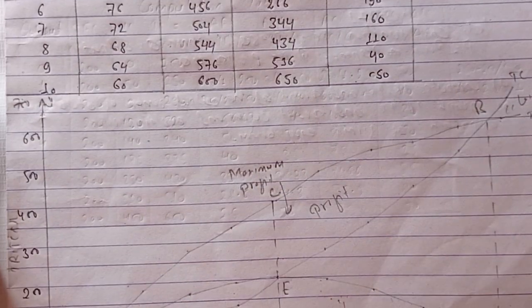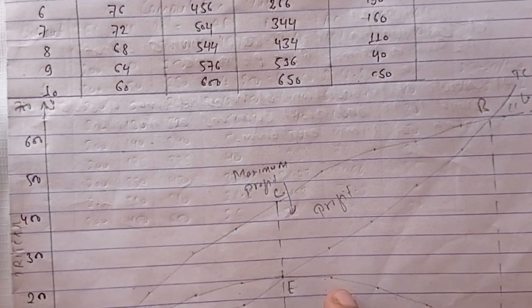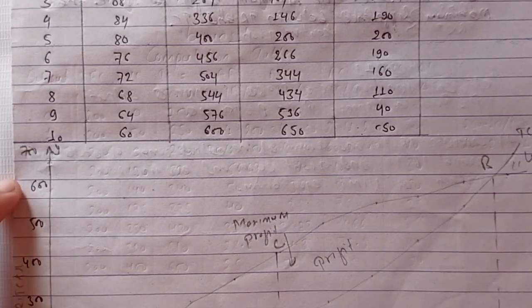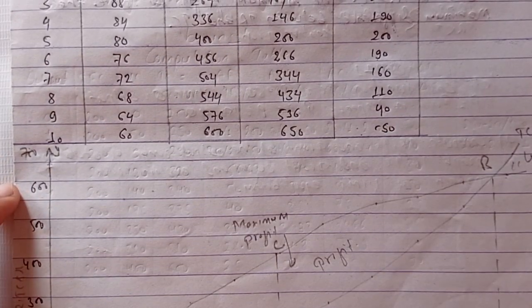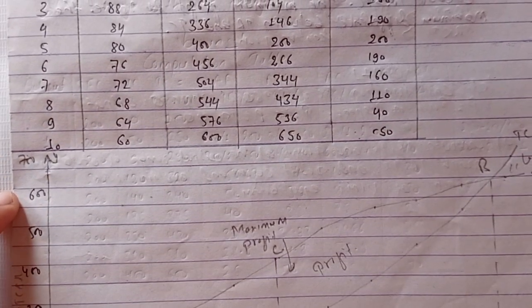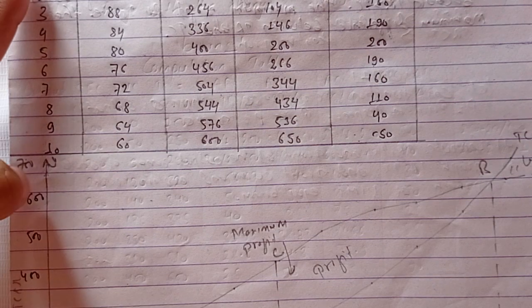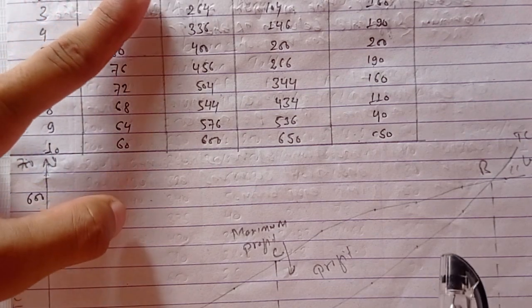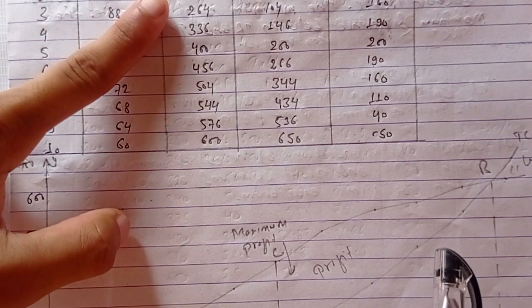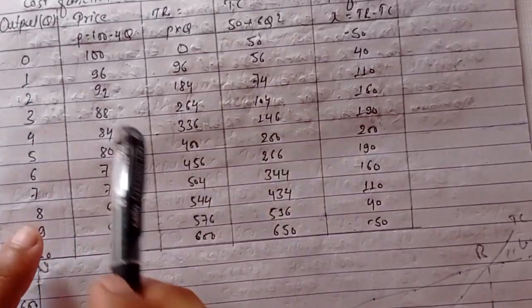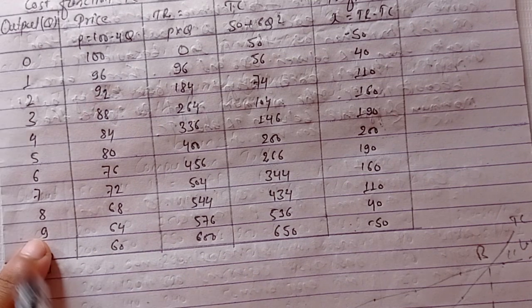In the figure, at zero output, TR equals zero and TC equals the fixed cost. The TR and TC curves are plotted for each output level.